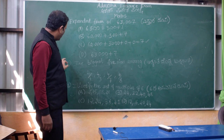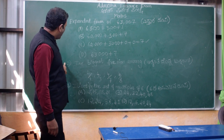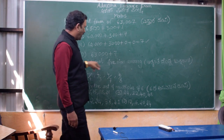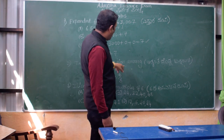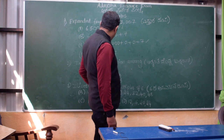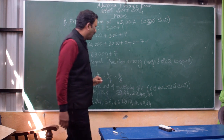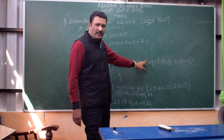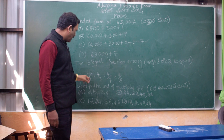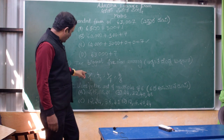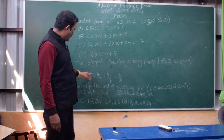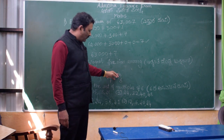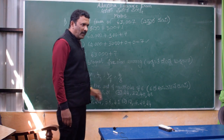Question number 2: Biggest fraction among these four. So what is the right answer? The options are 4 by 9, 4 by 3, 4 by 7, and 4 by 8.